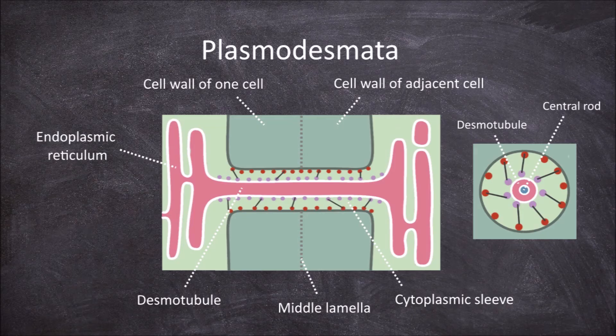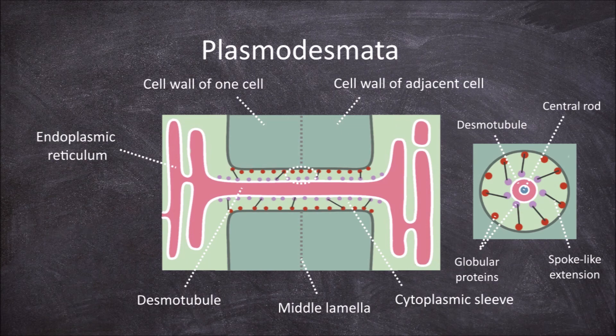The membrane of the desmotubule and plasma membrane are lined with globular proteins which are connected by spoke-like extensions that create smaller channels along the plasmodesmata. The space within these smaller channels are called central cavities.